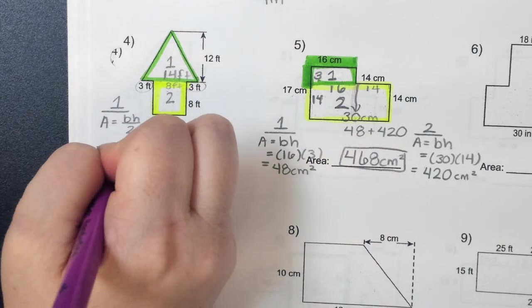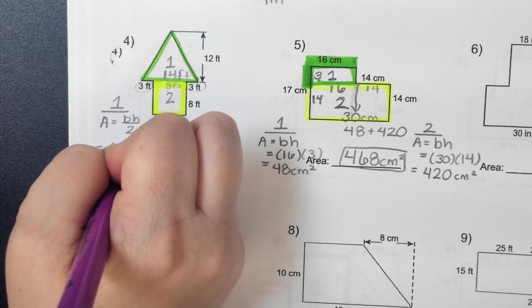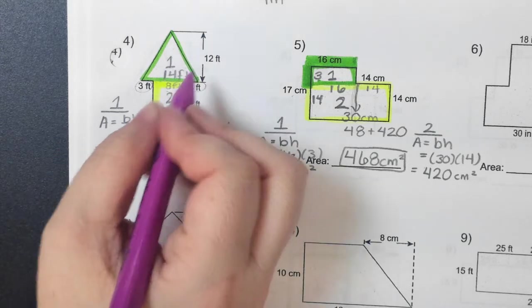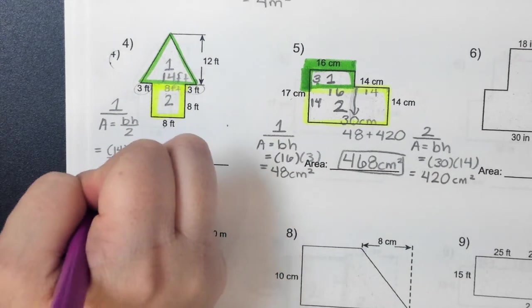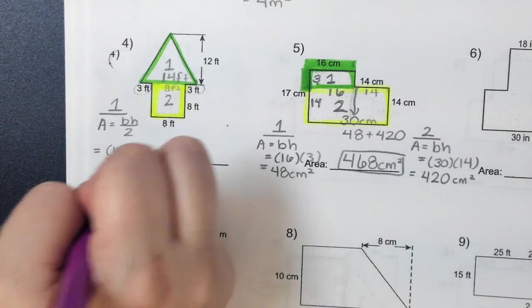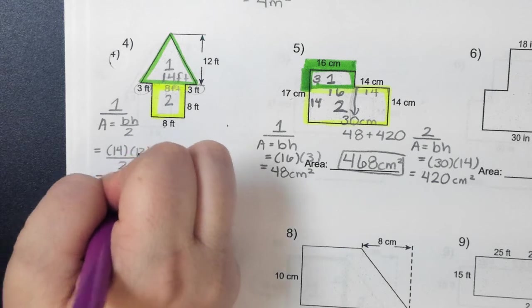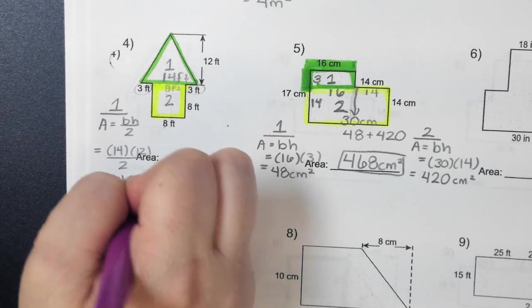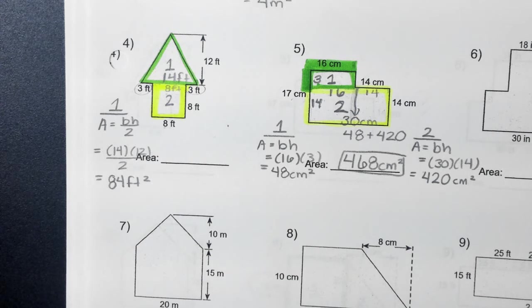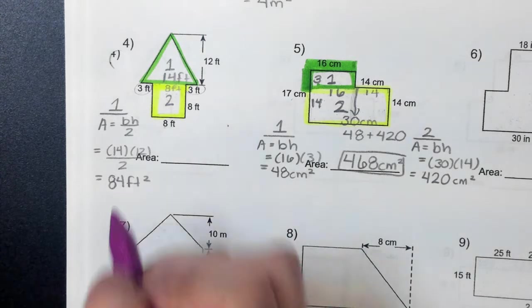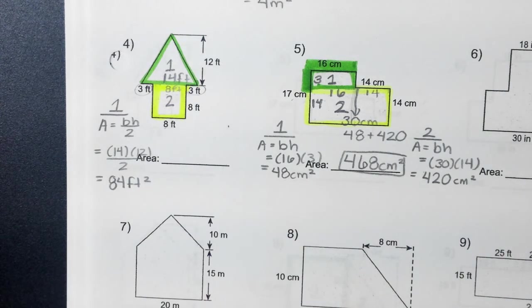My base is 14. What is my height? Chris? 12. From the bottom to the top is 12 divided by 2. Please do not forget to divide by 2. And, what do I get for my answer? Don't forget to divide by 2. Feet squared. Make sure, because it's that triangle. Make sure after you multiply, you divide by 2. 84 feet squared. Perfect.